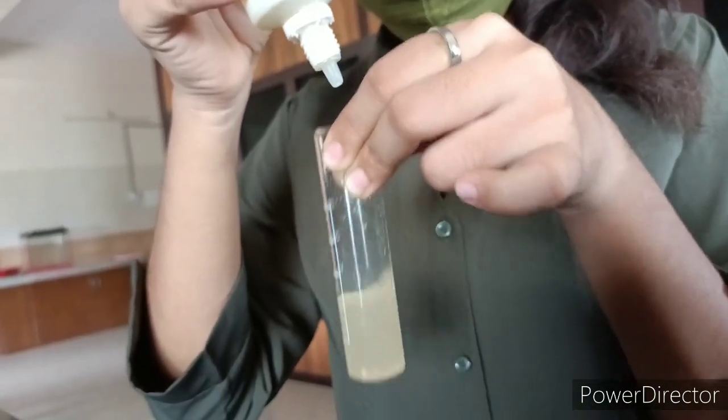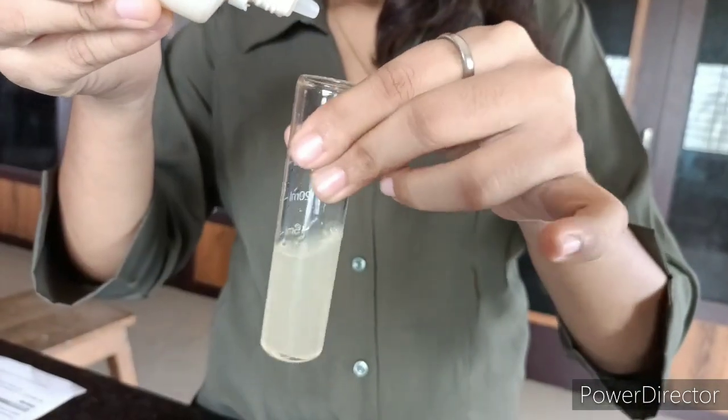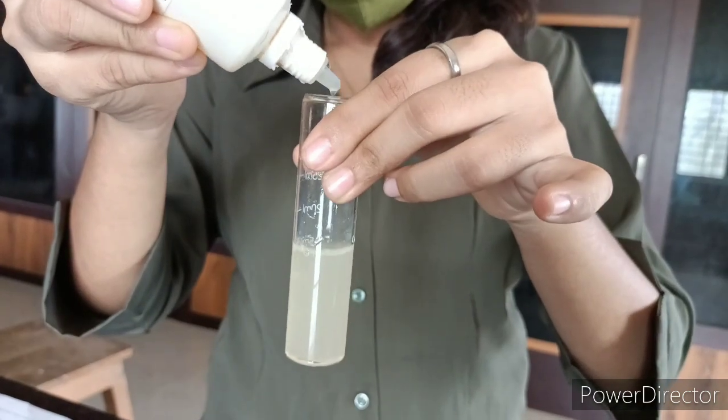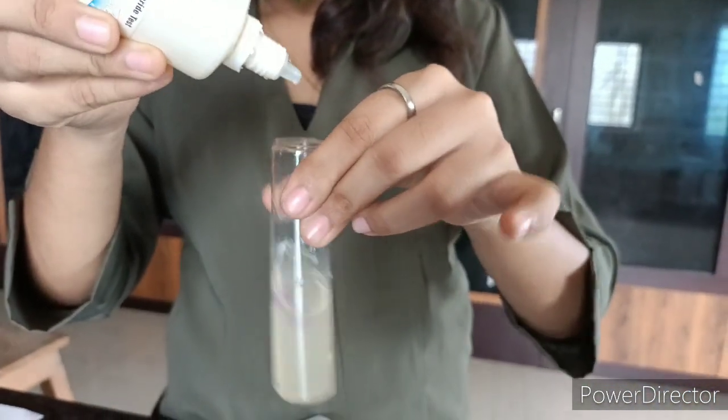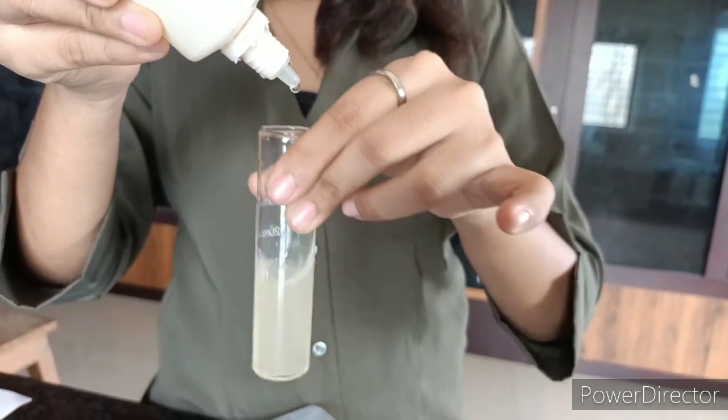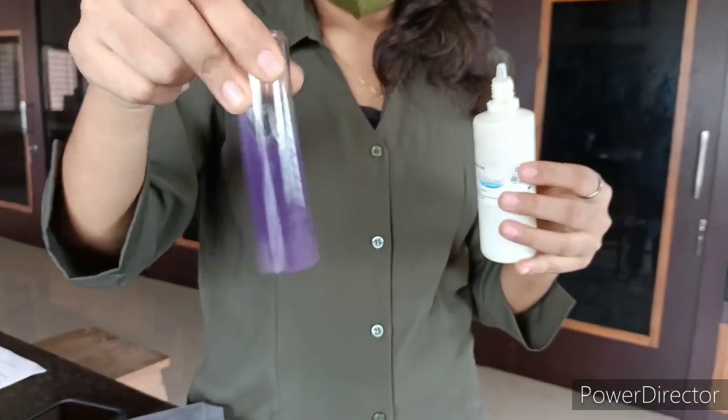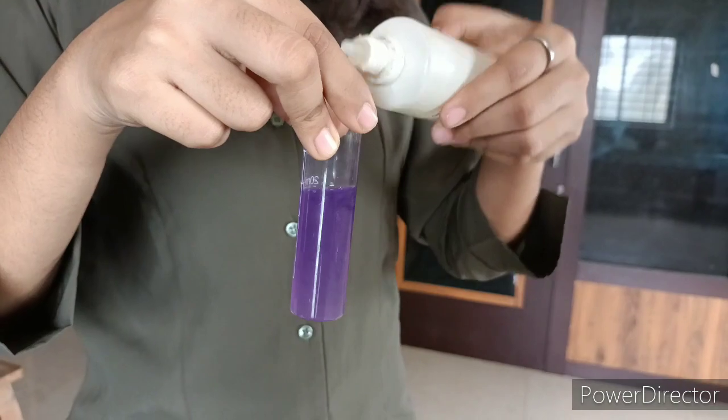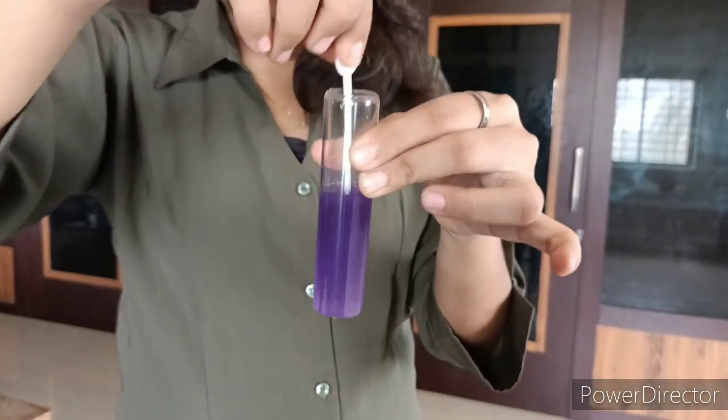it changes to a bluish violet color. As we are adding drops of this reagent, you can see some color change in our solution, and then finally it changes to a bluish purple color. Now for the calculation: